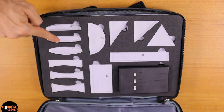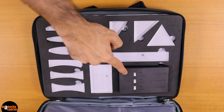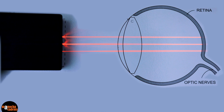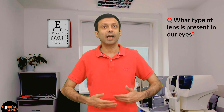This kit has so many lenses for us to try, and there's a ray box that gives a parallel beam of light. Here is a diagram of the human eye, and I'm going to use this ray box to throw a parallel beam of light on the eye. When the lens is not present in the eye, the parallel rays remain parallel, as you can see here, and they do not converge on the retina.